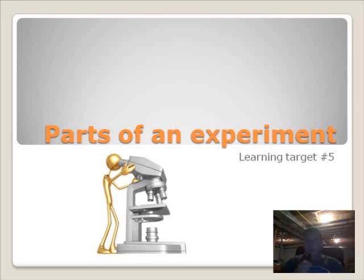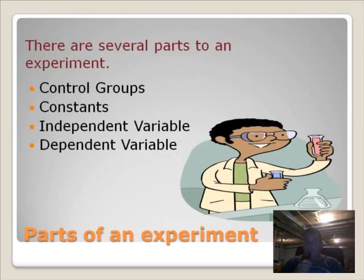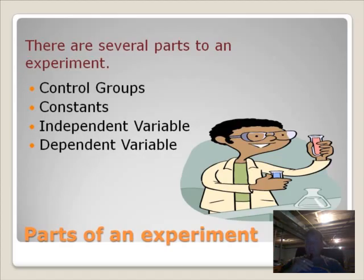Every experiment has several parts to it, and scientists try to get all four of these parts if it's possible. The first part is called the control group. The second part is called constants. The third part is called the independent variable, and the last part is called the dependent variable, and we'll look at each one of those individually.